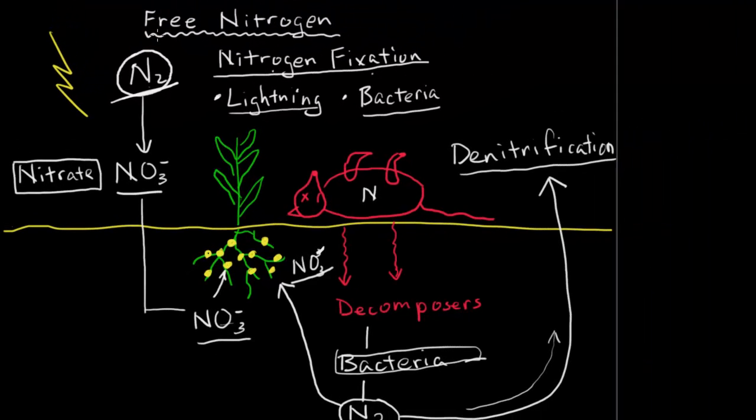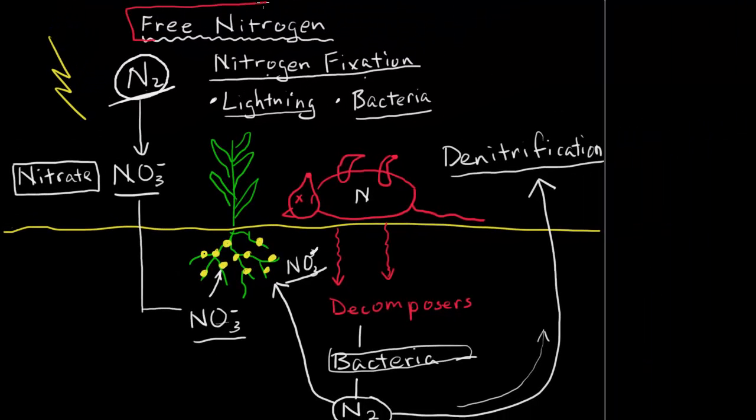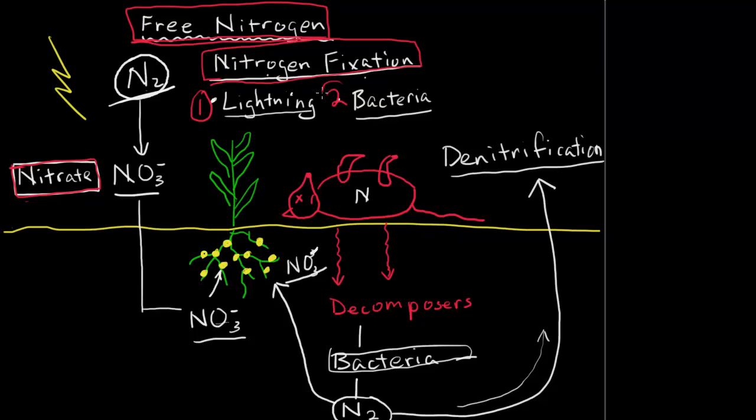The big three terms I want you to remember: one, free nitrogen, which is the N2 that we can't use in its natural state. Nitrogen fixation, which changes the N2 into these things called nitrates. The two ways of doing it is through lightning and through bacteria on the roots.